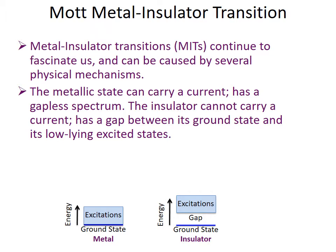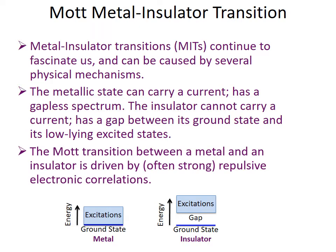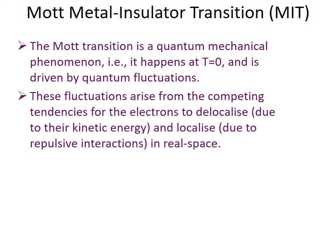Transitions between current-carrying metallic states and insulating states can be attributed to the fact that the energy spectrum of the former is gapless while that of the latter has a large gap even at room temperatures. The Mott metal-insulator transition is driven purely by strong repulsive electronic interactions, and is quantum mechanical, originating from the competing tendencies for the matter waves of electrons to delocalize across the system due to their kinetic energy and to localize in real space due to repulsion.